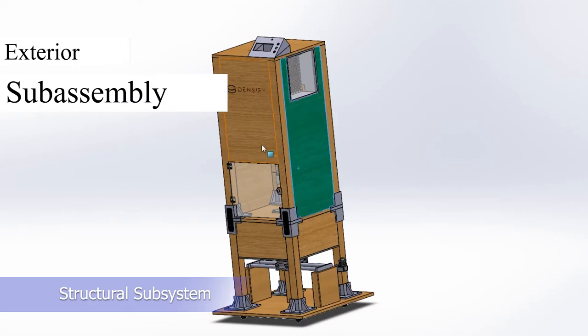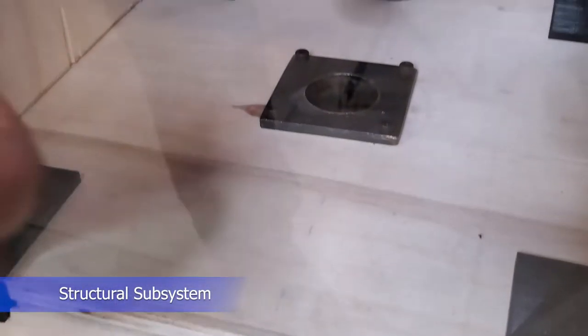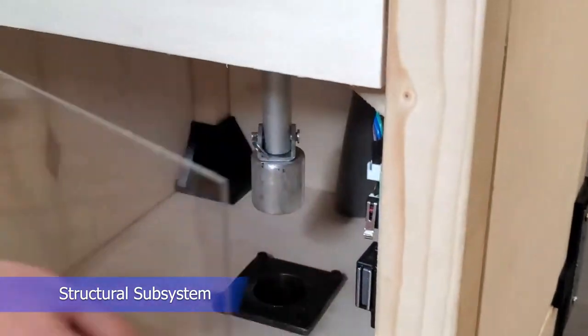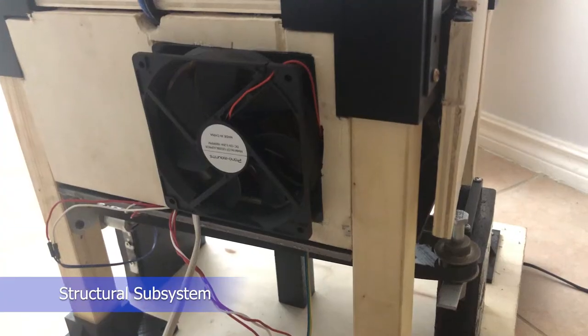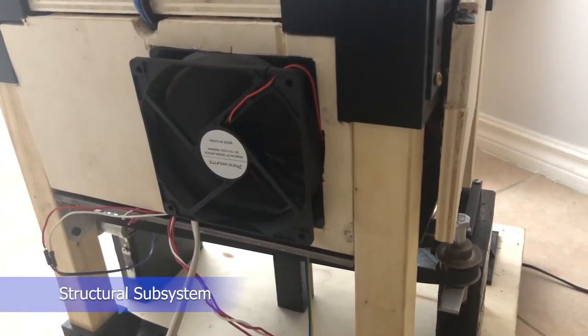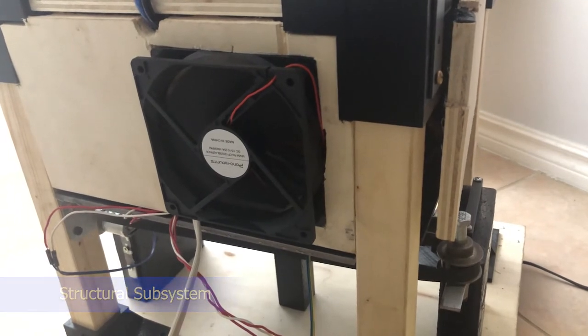The exterior sub-assembly includes casing panels that give the appliance a completed look in addition to a protective screen door made of acrylic. A DC fan is mounted at the back of the appliance to cool down the compaction chamber once the user is done densifying their plastic.